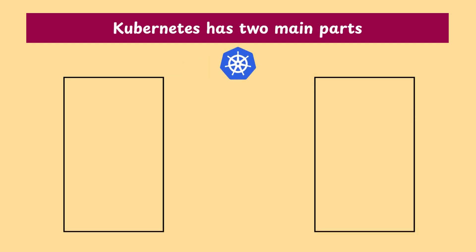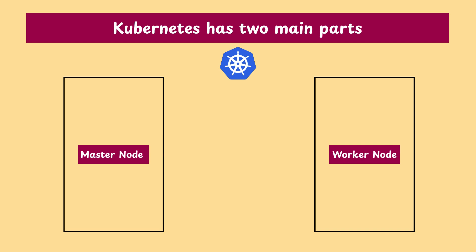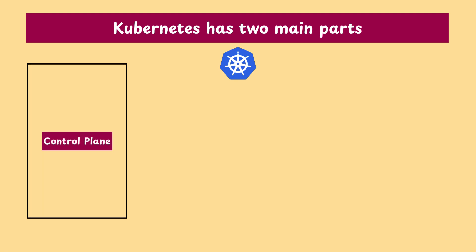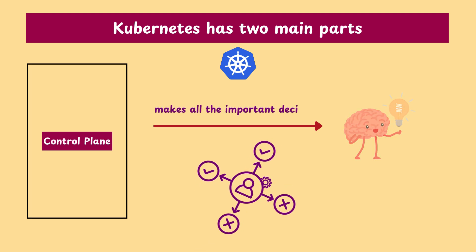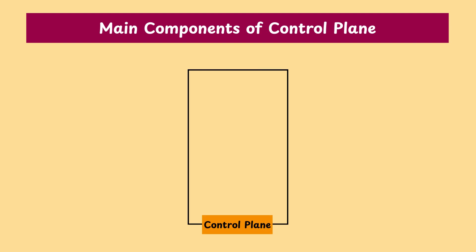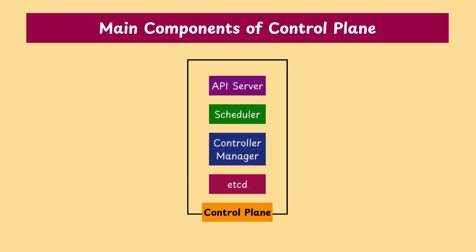Kubernetes has two main parts: master node and worker node. The master node is also known as the control plane. This is the brain of Kubernetes — it makes all the important decisions. Its main components are API server, scheduler, controller manager, and etcd.